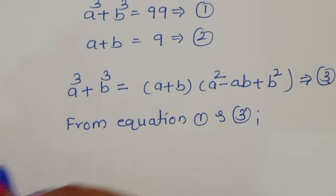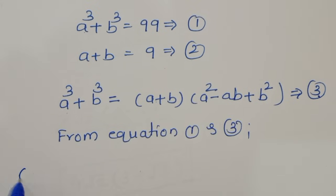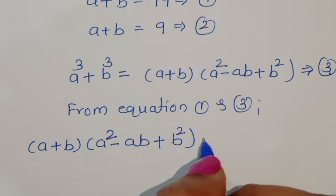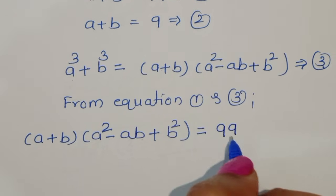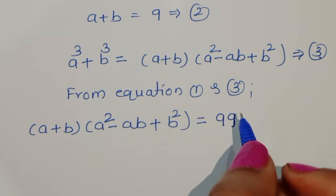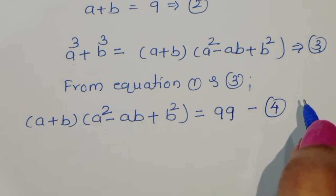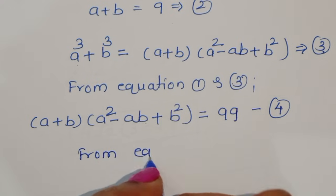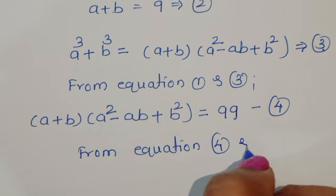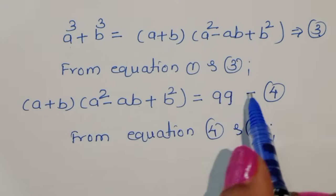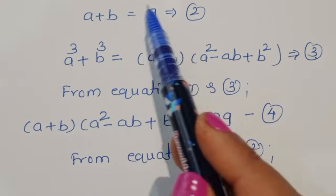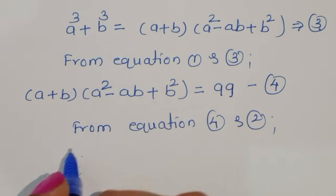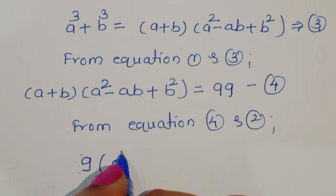From equations 1 and 3, we substitute: a plus b times a square minus ab plus b square is equal to 99. This is equation number 4. Now from equations 4 and 2, since a plus b equals 9, we substitute that value into equation 4. So we get 9 times a square minus ab plus b square equals 99.